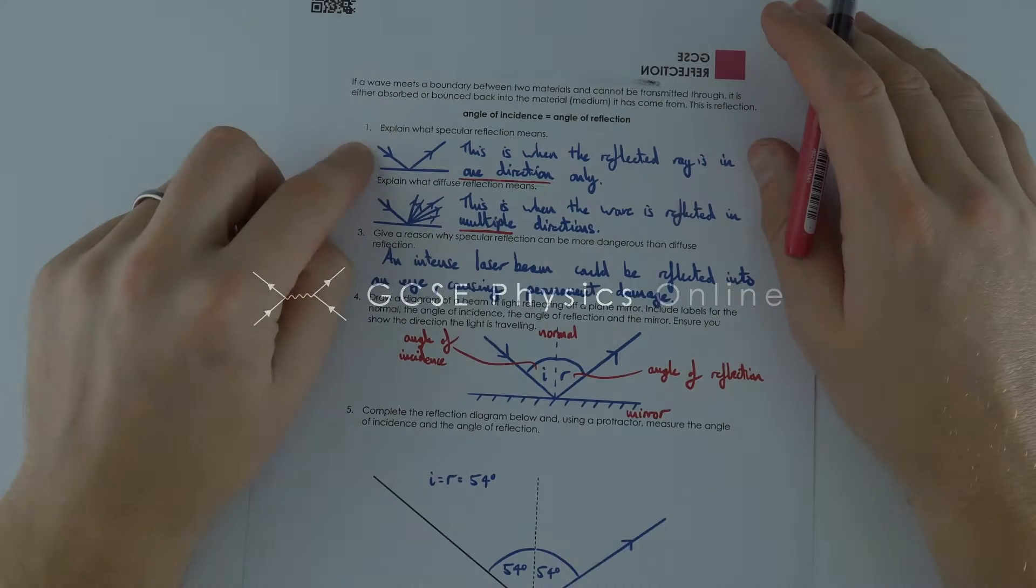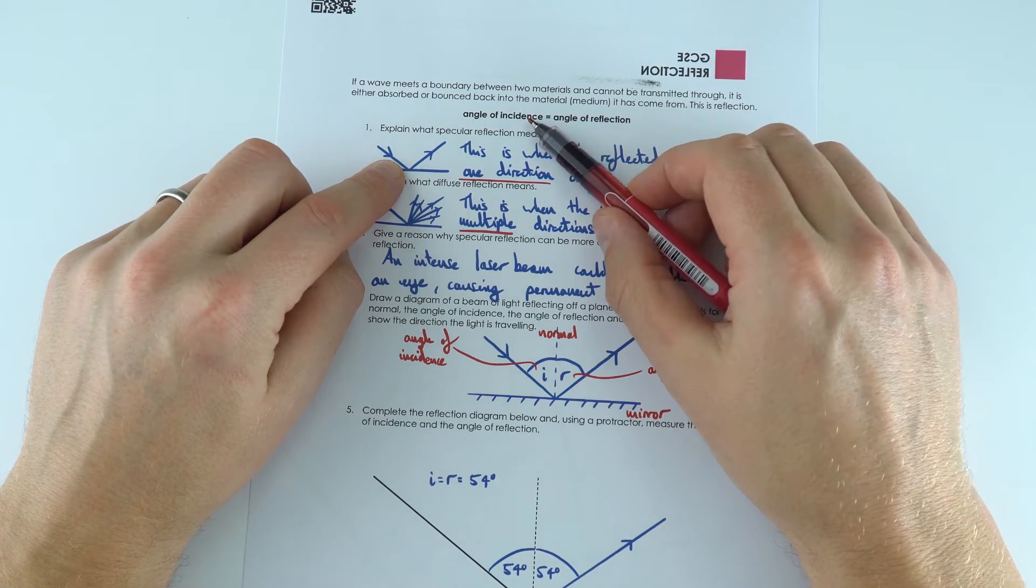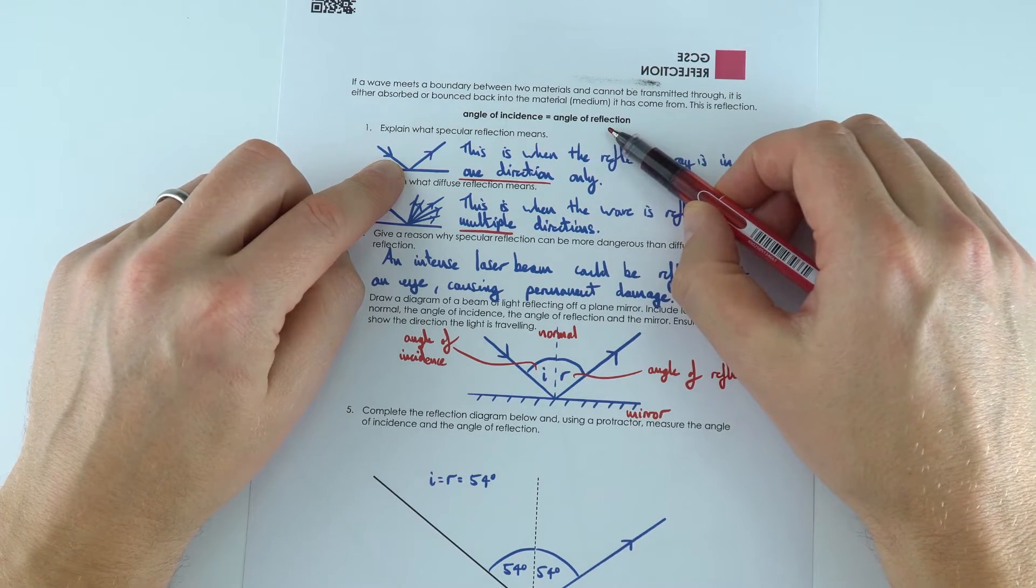Now the common type of reflection that we have is called specular reflection, and this is where the angle of incidence is equal to the angle of reflection.